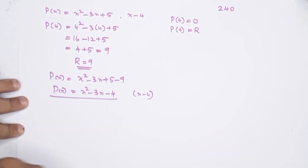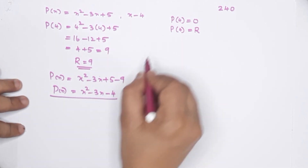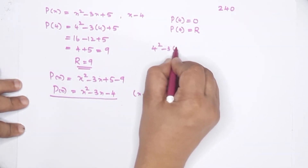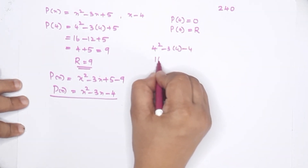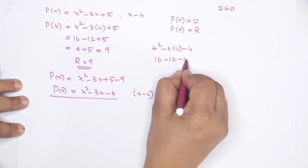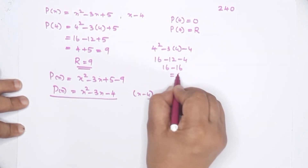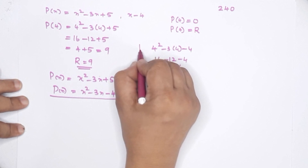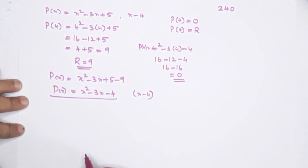I will verify the factor. P of 4 equals 4 squared minus 3 into 4 minus 4, that is 16 minus 12 minus 4, which equals 16 minus 16, that is equal to 0. So the factor is confirmed.